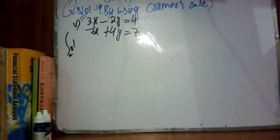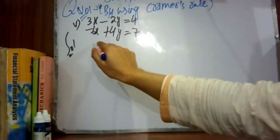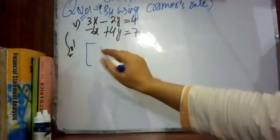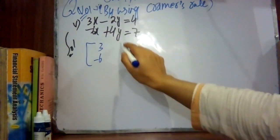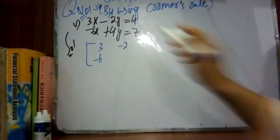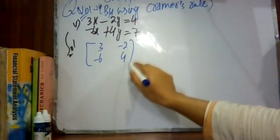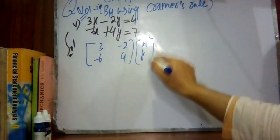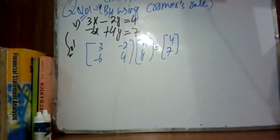Let's solve this. The first step is to write these equations in matrix form. In the first column, write the coefficient of x: 3 for the first equation and minus 6 for the second. In the second column, write y's coefficients: minus 2 and 4. Then write down unknown variables x and y, and the constant terms matrix: 4 and 7.